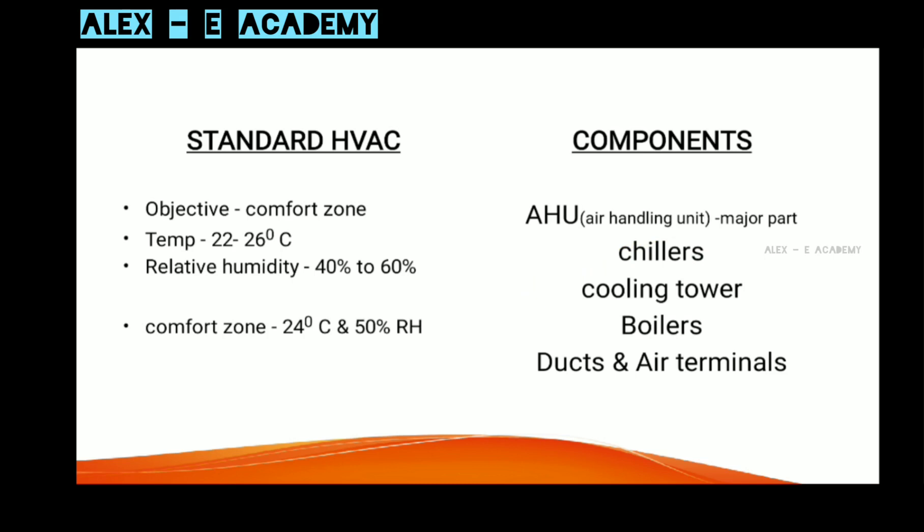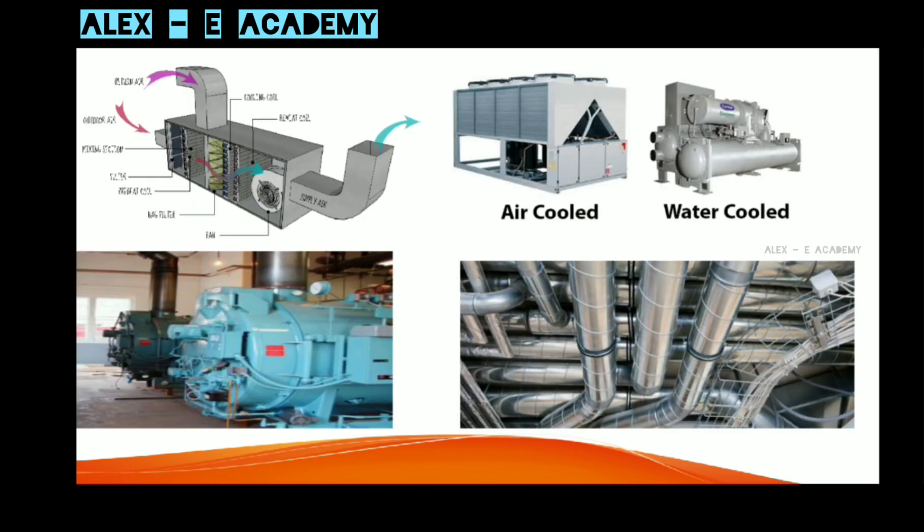A standard HVAC system has a comfort zone of around 50% relative humidity. The main components of an HVAC system are the air handling unit, chillers, cooling towers, boilers, ducts, and air terminals.